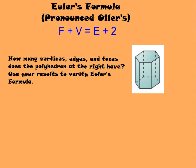Let's check out Euler's formula. Leonard Euler was a Swiss mathematician who discovered a relationship among the numbers of faces, vertices, and edges of any polyhedron. The sum of the number of faces and vertices equals the number of edges plus 2: F plus V equals E plus 2. We're going to use this formula to verify it — find how many vertices, edges, and faces a polyhedron has and make sure it works.